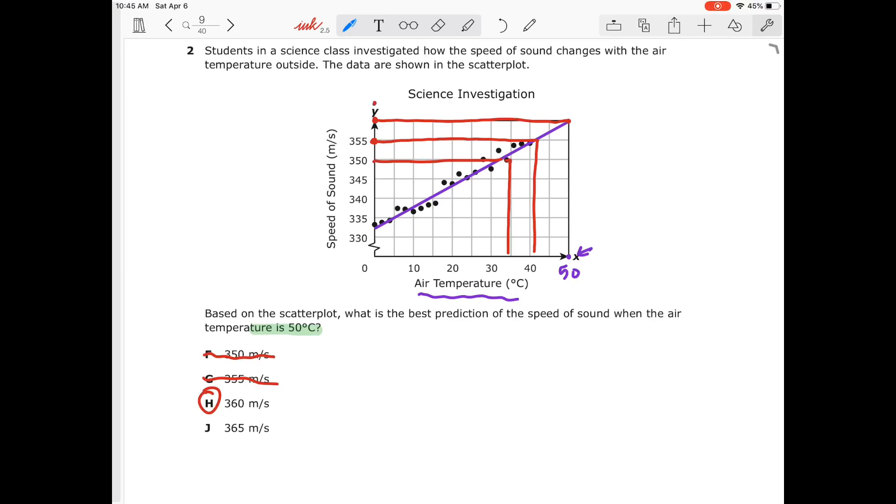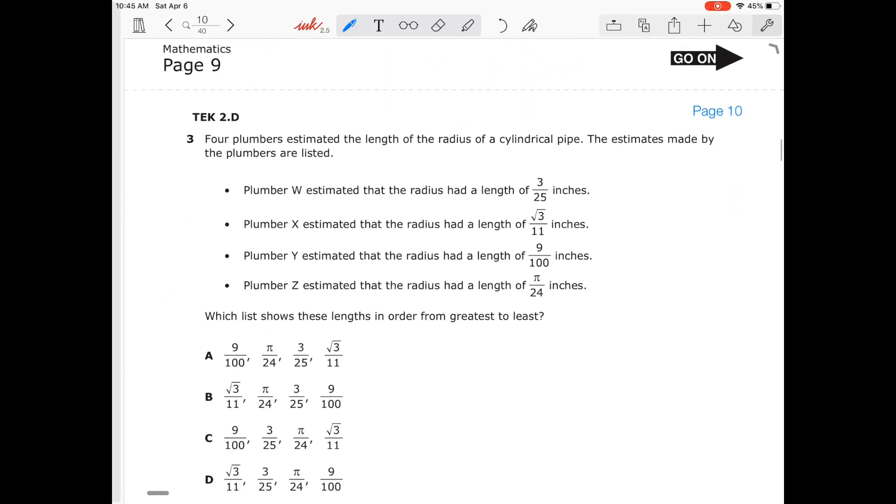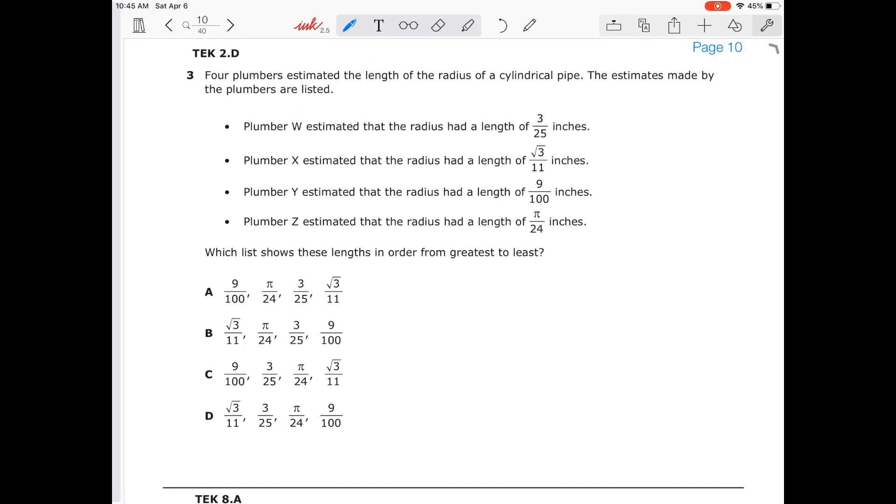365 would be up here and would probably go past in our line of best fit. That would be about 55 degrees for our line of best fit. All right, there you go. That helps you on that problem. So now let's go to number three. Number three is really easy. Four plumbers have estimated length of radius of cylinder pipes and the estimations made by the plumbers are listed below. We want to know which of these lengths in order from greatest to least. This is really easy. All we need to do is convert each of these into decimal form.